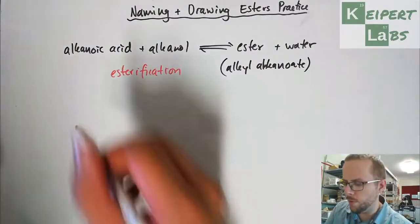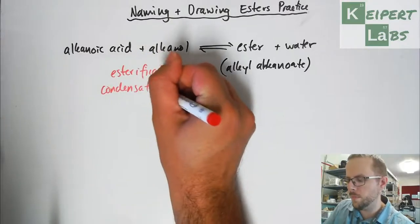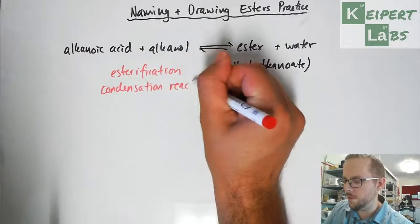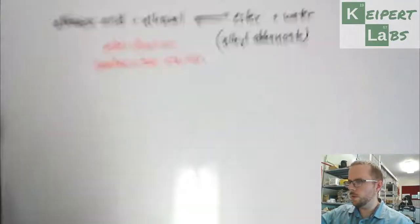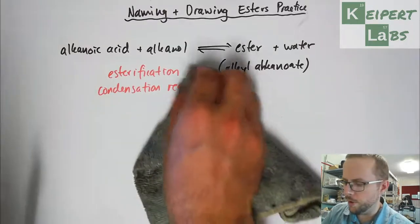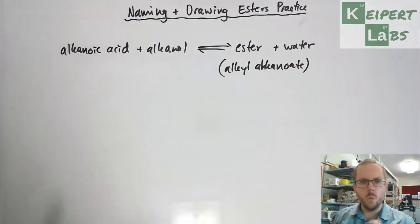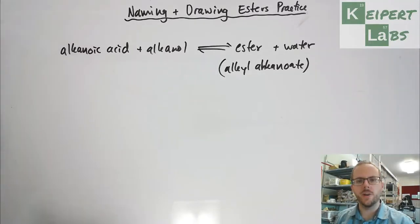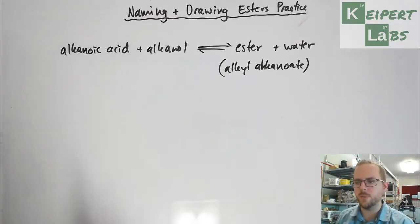It's a type of what we call a condensation reaction, but more on that in the next video. What we're going to do in this video is go through some practice questions of how we can look at what ester is going to form from two substances, then look at how we can identify how an ester would break apart — what alkanol and alkanoic acid it was formed from.